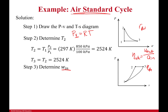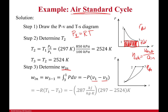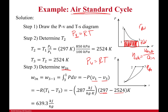Let's calculate the work input. That's how much energy it takes to compress the gas — equivalent to the compressor work. Since pressure is constant for process 3 to 1, that's just P·dV. I need volumes V1 and V3, which I don't directly know. However, using the ideal gas law — PV = RT — I can substitute that in. Plugging in my temperatures (T1 was given, T2 we calculated), I get 639.3 kJ/kg. That's how much energy it takes to compress the gas.